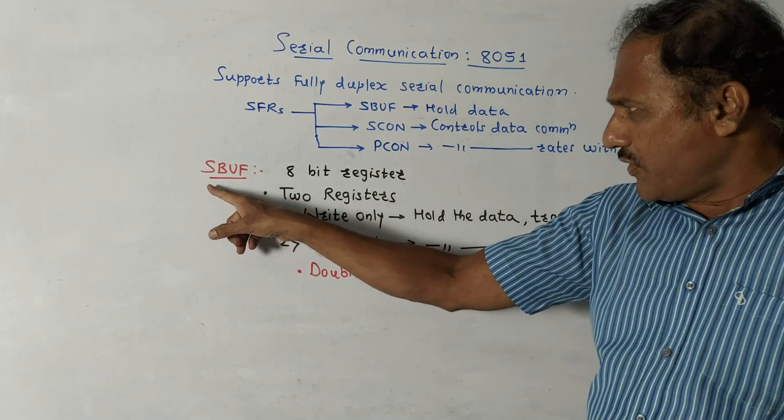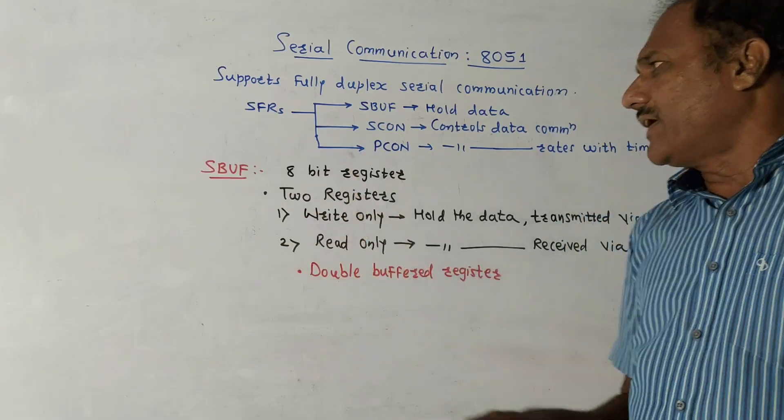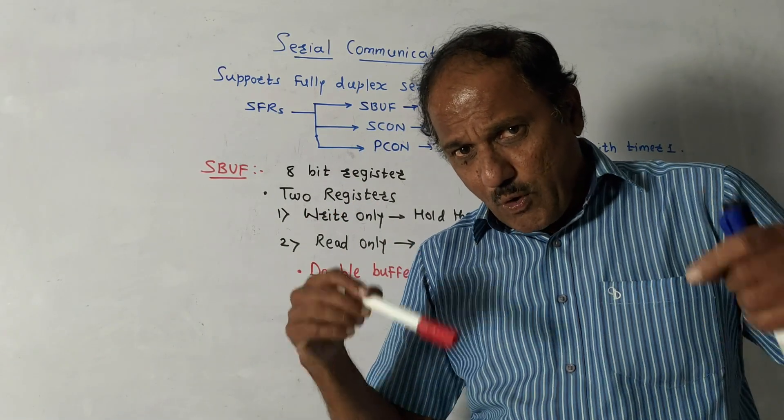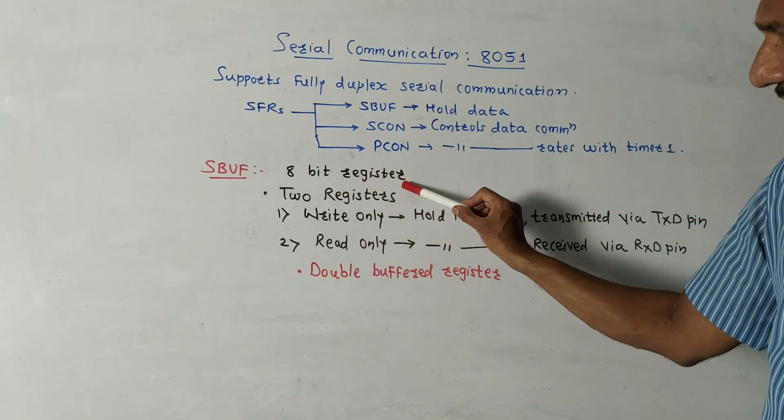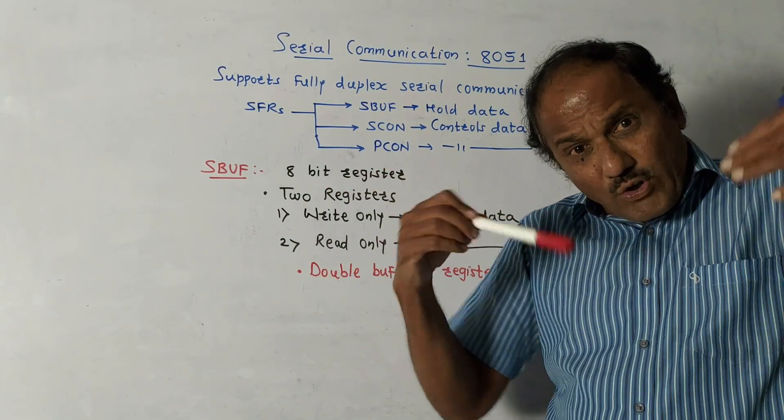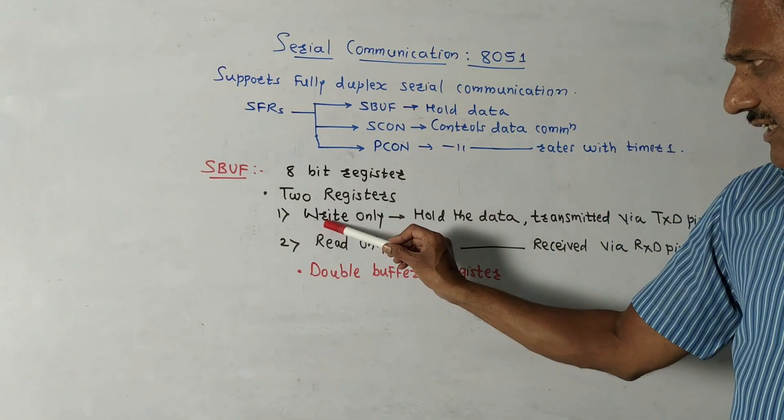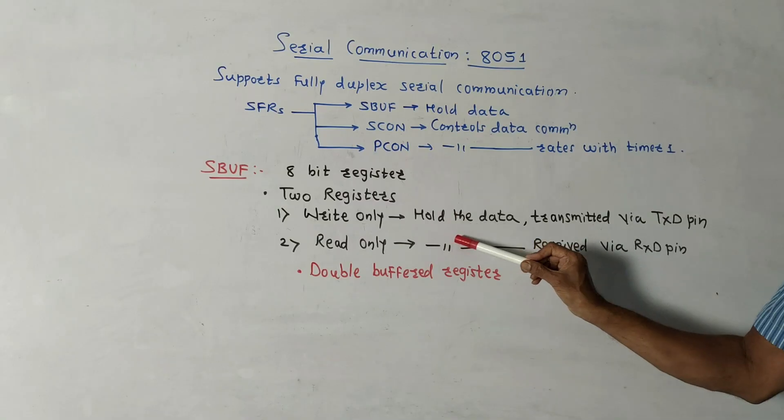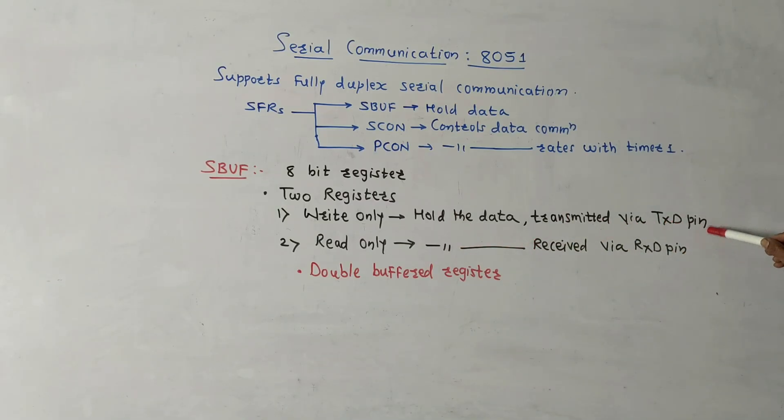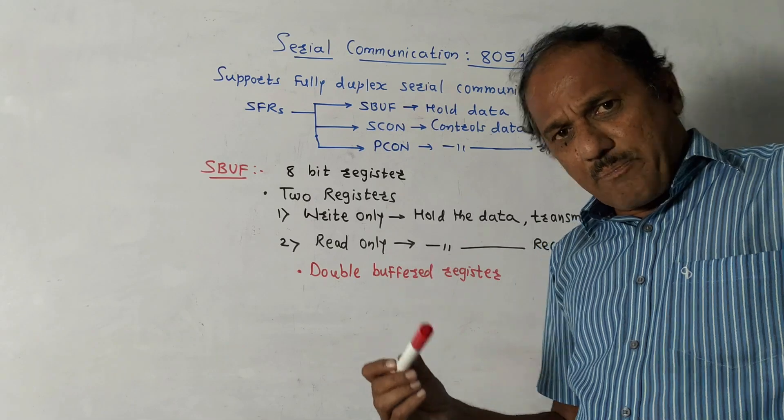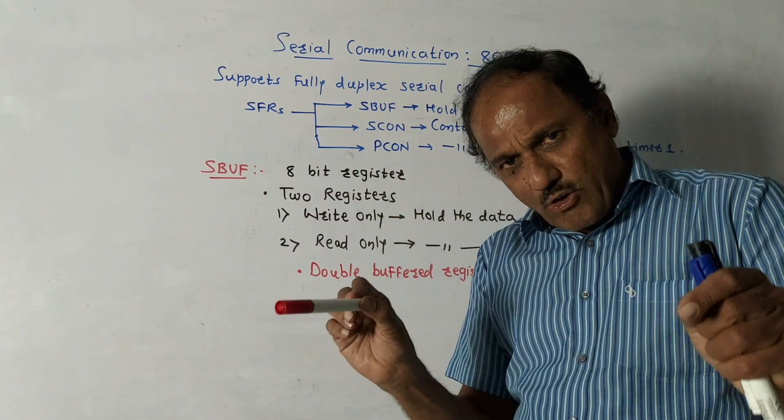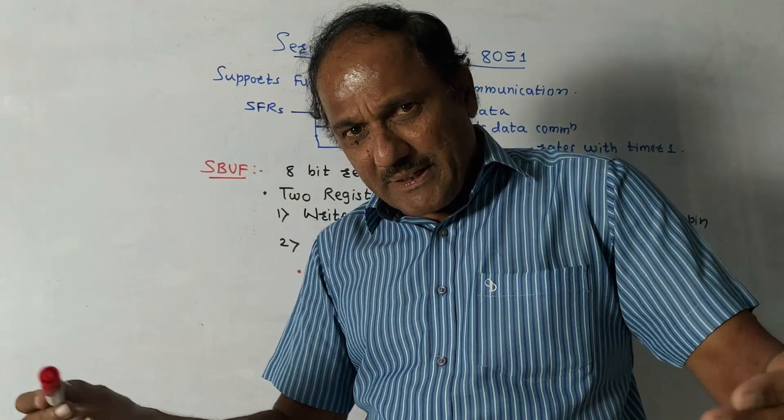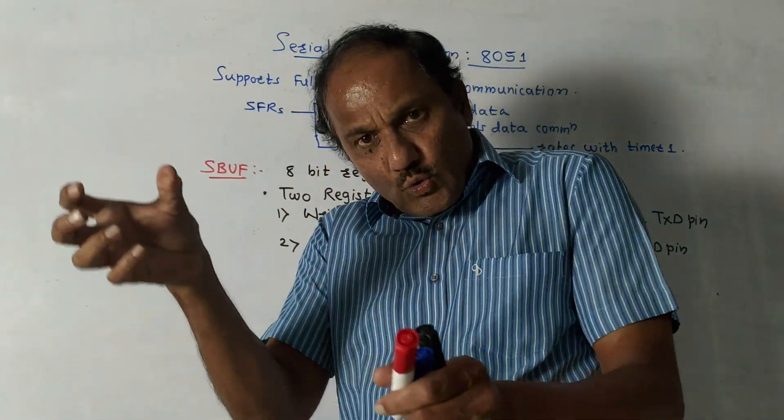First we'll discuss serial buffer register. As the name indicates, the function of this register is to provide the buffering action. It is basically an 8-bit register. It has two registers. The first register is used for write operation only. That means it holds the data transmitted via TXD pin. We have discussed the pin configuration. TXD pin of 8051 is used to transmit the data.